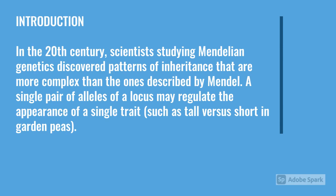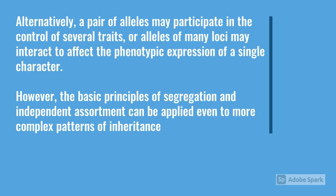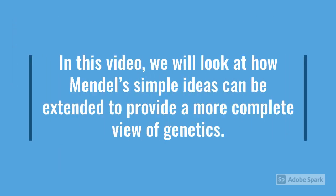In the 20th century, scientists studying Mendelian genetics discovered patterns of inheritance that are more complex than the ones described by Mendel. A single pair of alleles of a locus may regulate the appearance of a single trait, such as tall versus short in garden peas. Alternatively, a pair of alleles may participate in the control of several traits, or alleles of many loci may interact to affect the phenotypic expression of a single character. The basic principles of segregation and independent assortment can be applied even to more complex patterns of inheritance. In this video, we will look at how Mendel's simple ideas can be extended to provide a more complete view of genetics.